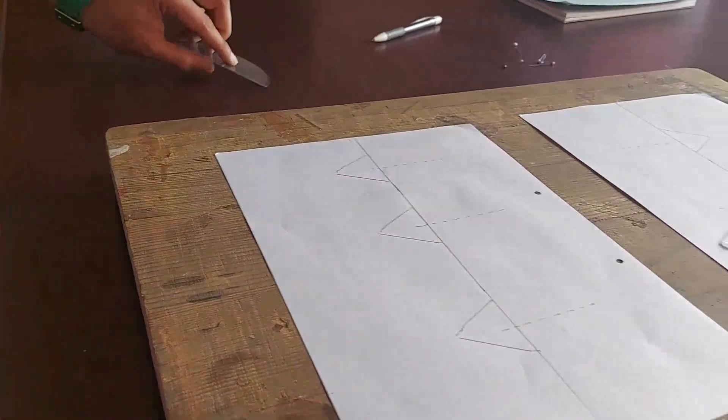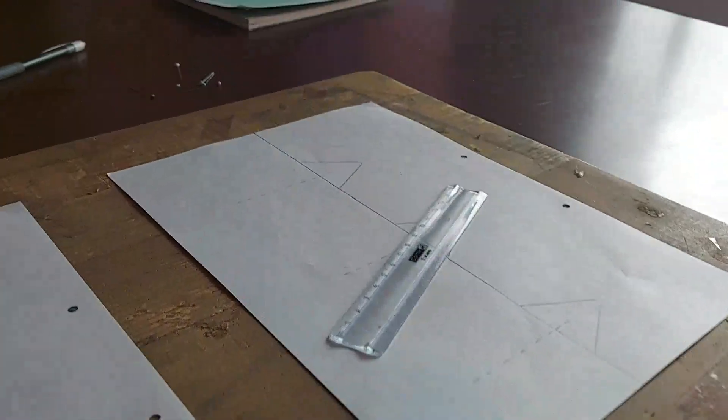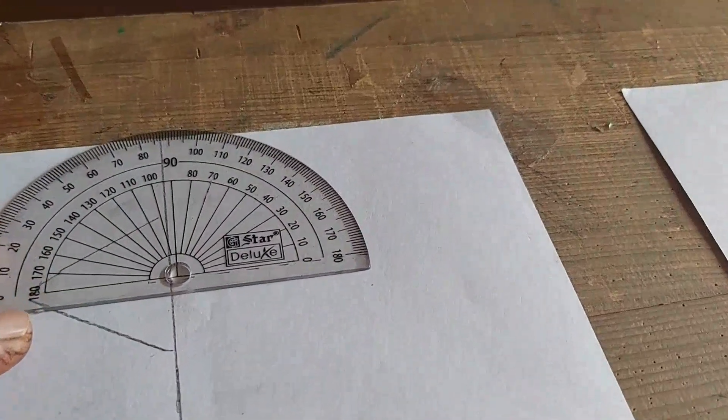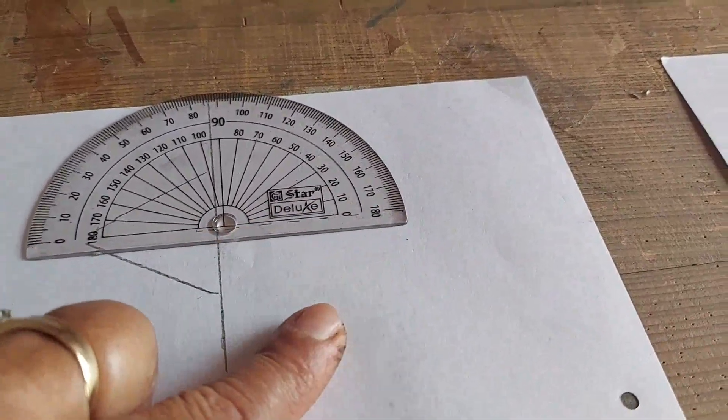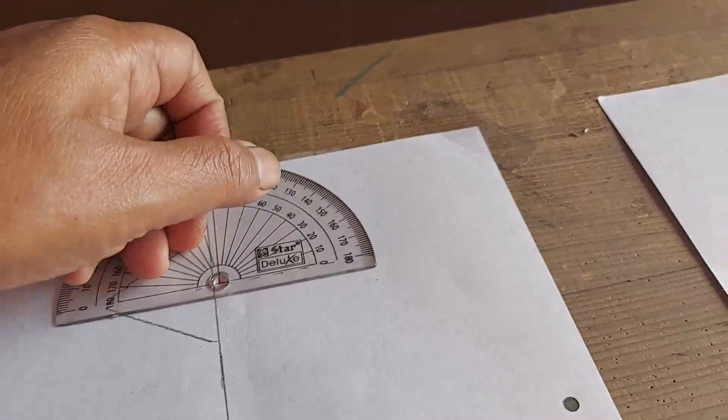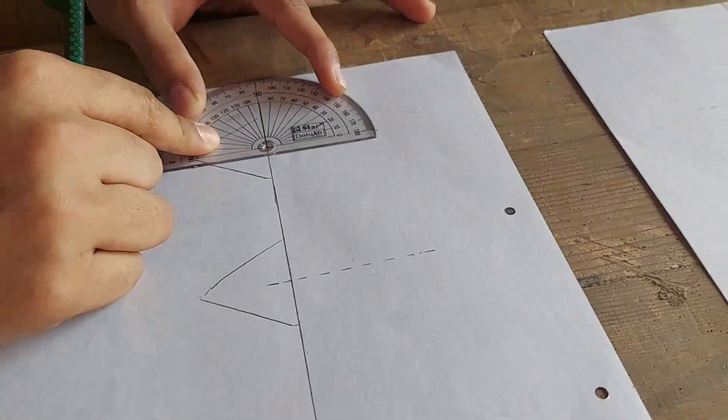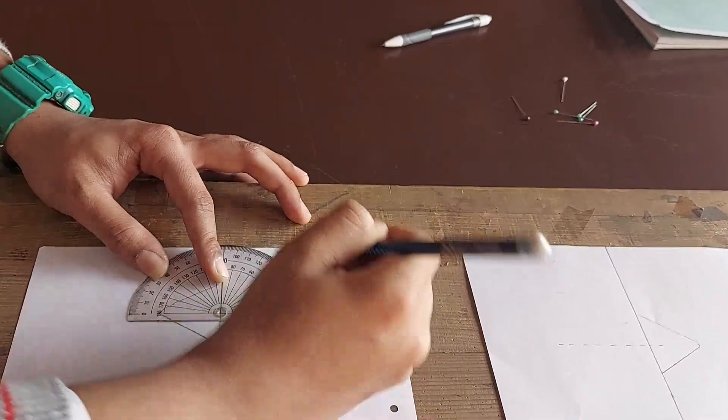Now we start with the angle of incidence as 35. So you will draw the incident ray by placing the protractor this way. Can you see how the protractor is being placed? The horizontal line is along the normal and then we will measure the angle of incidence, because angle of incidence is the angle between normal and the incident ray.